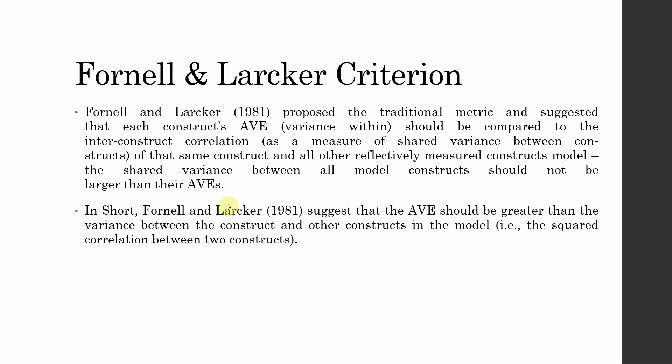In simple terms, the square root of AVE for the construct must be higher than its correlation with all the other constructs in the study. Fornell and Larker suggest that the square root of AVE should be greater than the variance between the construct and the other constructs in the model — that is, the squared correlation between the two constructs. So either you take the square root of AVE or you square your correlation. Do not do both. This is how you establish the Fornell and Larker criterion.